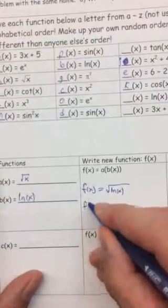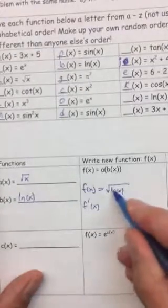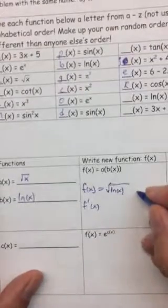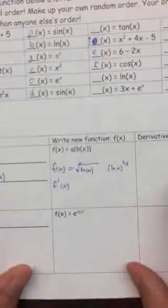Then you're going to do the derivative. And in this case, it's a chain rule. And the inside function is natural log of X. The outside function is square root of X. So this is natural log of X to the one-half. Yours will be different, but that's okay.